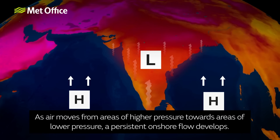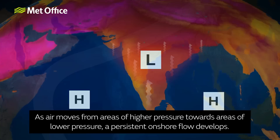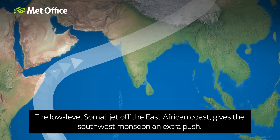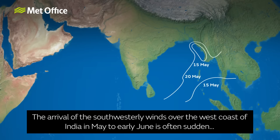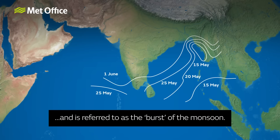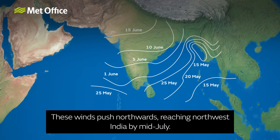As air moves from areas of higher pressure towards areas of lower pressure, a persistent onshore flow develops. The low-level Somali jet off the east African coast gives the southwest monsoon an extra push. The arrival of the southwesterly winds over the west coast of India in May to early June is often sudden, and is referred to as the burst of the monsoon. These winds push northwards, reaching northwest India by mid-July.